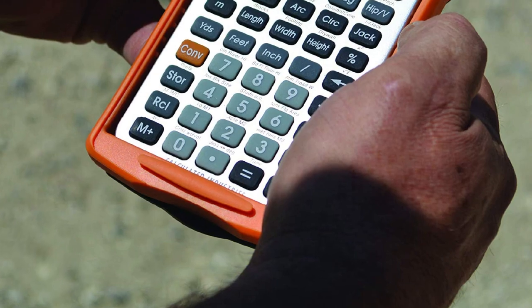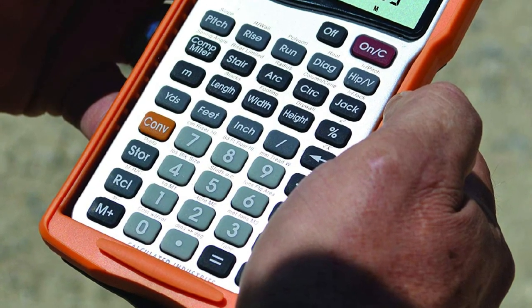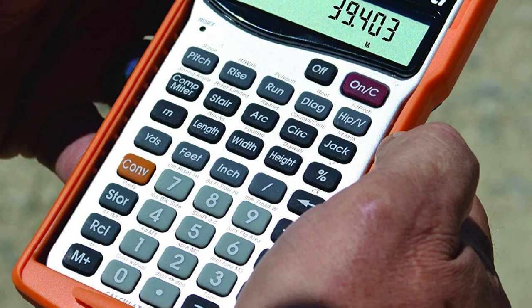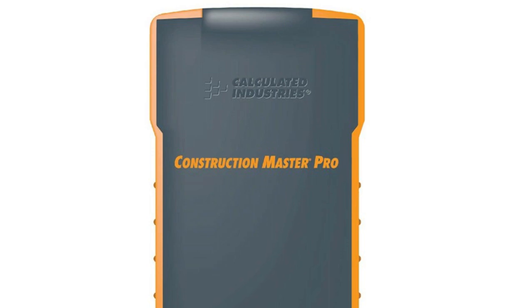Lets you effortlessly work in and convert between all common building dimension formats. Feet inch fractions, decimal feet inches, yards, and metric, including area and volume. Plus weight per volume and DMS to decimal degree conversions too.